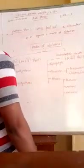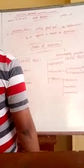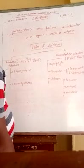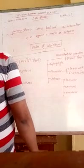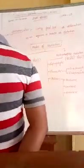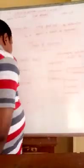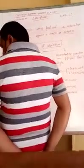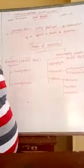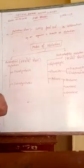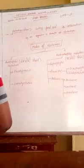Autotrophic means self-making food. Some organisms like plants and some algae make their own food. In autotrophic nutrition, organisms manufacture their own food. Green plants, some bacteria, and euglena — euglena is also a kind of algae — all fall under autotrophic nutrition.